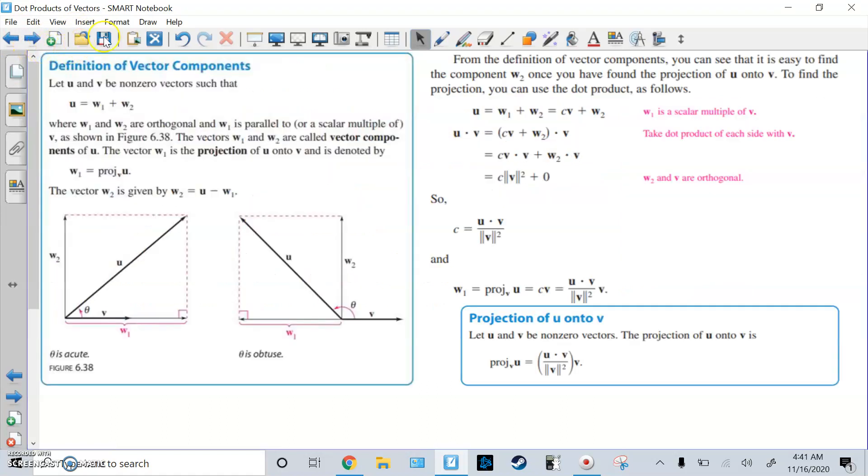So here's the definition of vector components. If you have U and V, they're not 0. Where U is W1 plus W2, where W1 and W2 are orthogonal. And W1 is parallel to or a scalar multiple of V, which will always happen. Then the vectors W1 and W2 are called vector components of U. And the vector W1 is the projection of U onto V. Denoted W1 is the projection of U onto V. This sounds like a lot, but it's easier. I'll show you what I mean on the next screen.